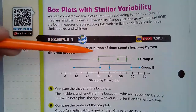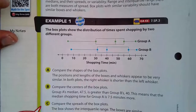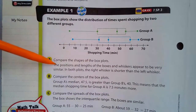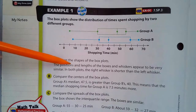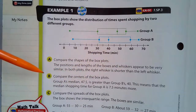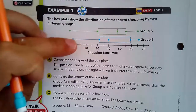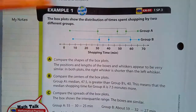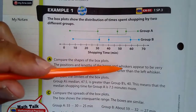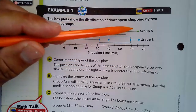The box plots show the distribution of time spent shopping by two different groups. Comparing the shapes: the positions and lengths of the boxes and whiskers appear to be very similar — one is just shifted to the right a little bit but the shape is very similar. In both plots, the right whisker is shorter than the left whisker.